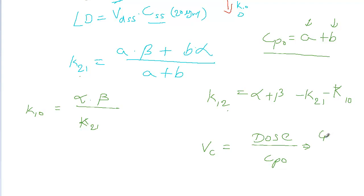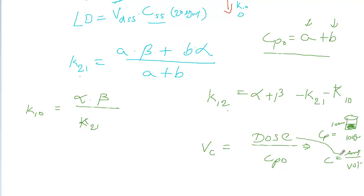This makes intuitive sense: if you want to find concentration in a container, say 100 ml of water with 100 grams of drug, concentration is amount over volume. Similarly here, concentration equals dose over Vc, so Vc equals dose divided by CP naught. Now we have Vc.